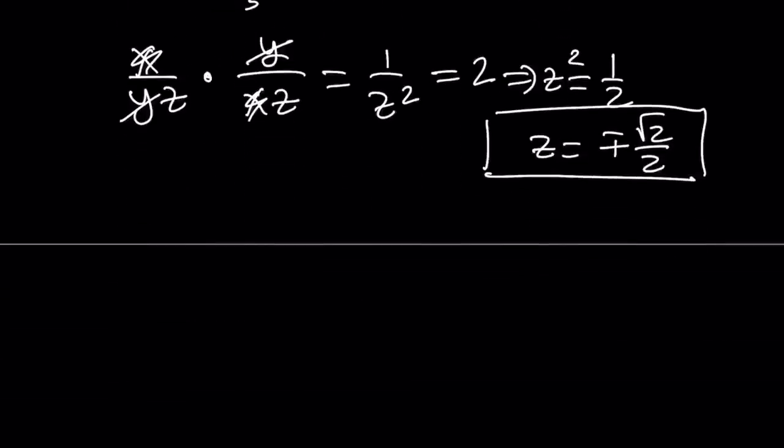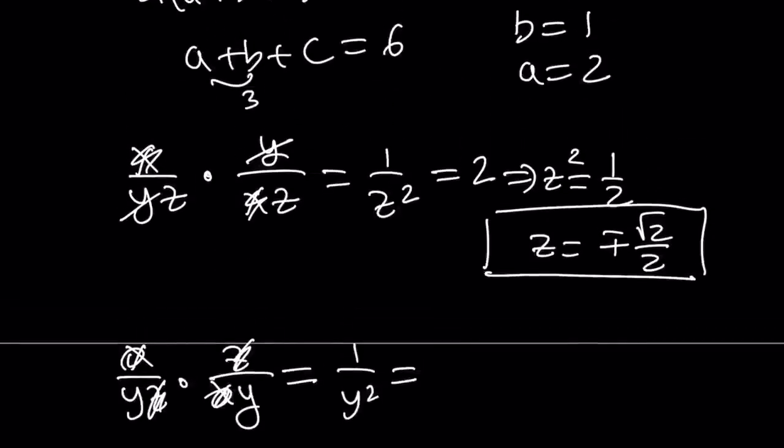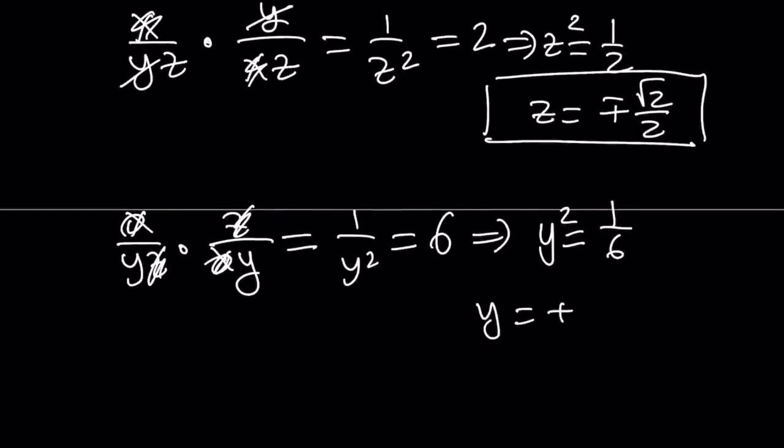So for example, if I take X over YZ and multiply it by Z over XY, now this gives me the following. Z cancels out, X cancels out, and I end up with 1 over Y squared. But notice that we're multiplying A and C. So A times C is equal to 6, and from here we get Y squared equals 1 over 6, which means Y equals plus minus 1 over root 6, which can be written as root 6 over 6. Awesome. That is going to be my Y value.